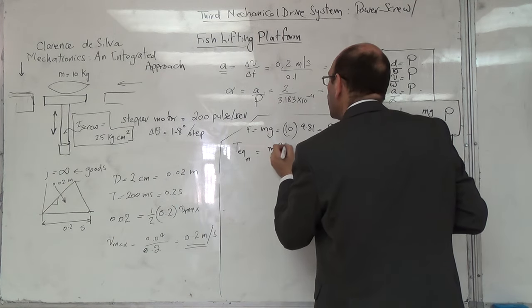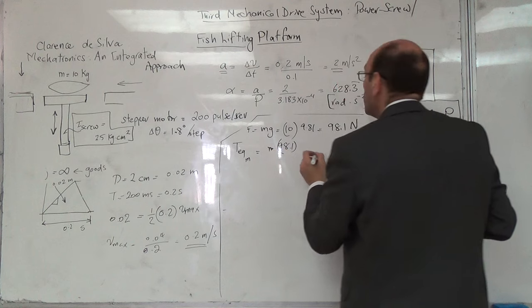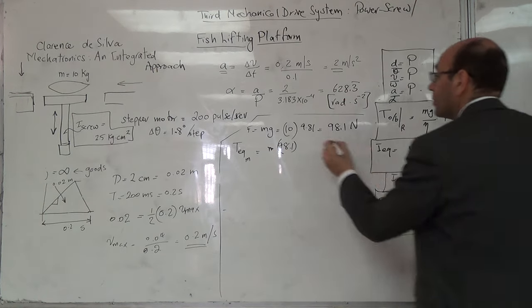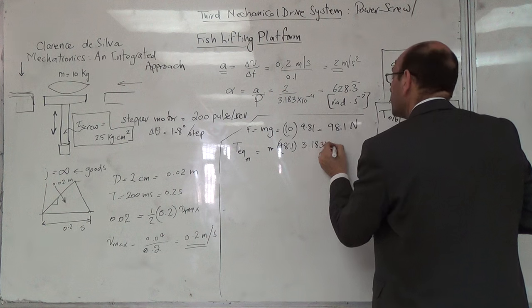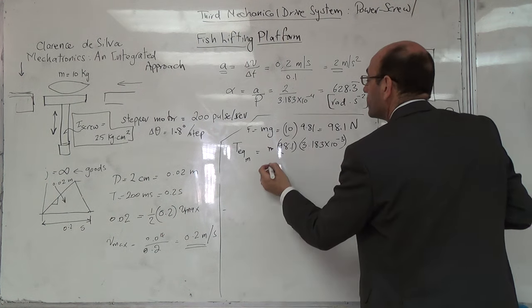So it equals 98.1, and P which is 3.183 times 10 to the minus 3.